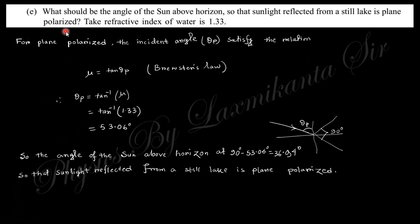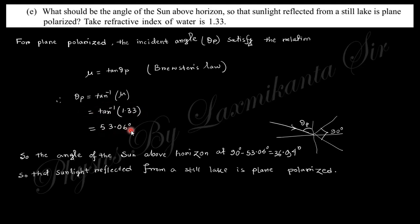The next question says: what should be the angle of the sun above the horizon so that sunlight reflected from a still lake is plane polarized? For plane polarized reflected light, the angle of incidence must equal Brewster's angle θp. From Brewster's law, the refractive index μ = tan(θp), so θp = tan⁻¹(μ). Putting μ = 1.33, you obtain θp = 53.06°. The angle above the horizontal is 90° − 53.06° = 36.94°.